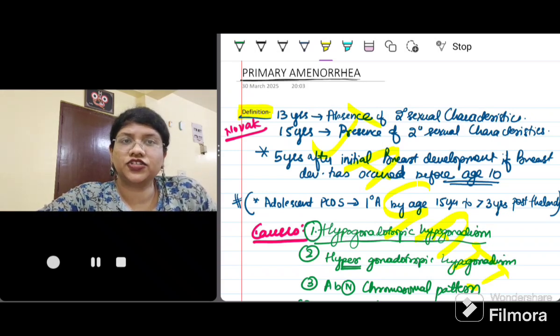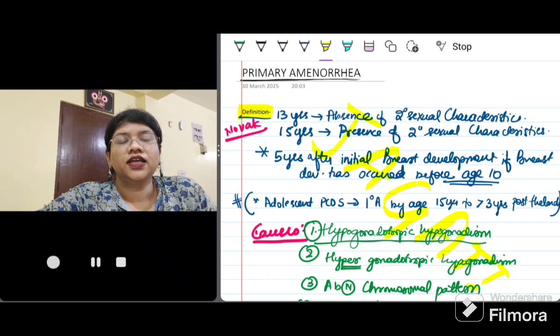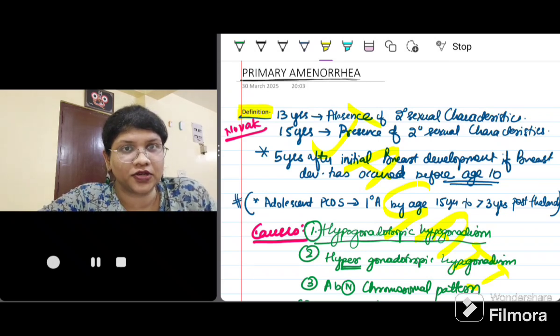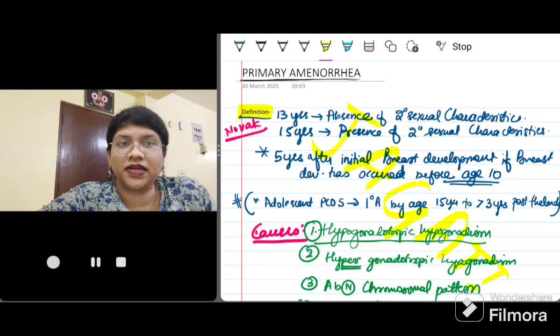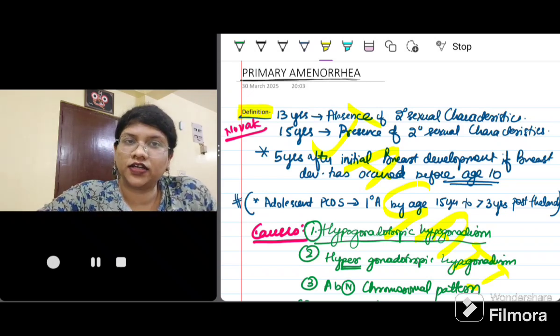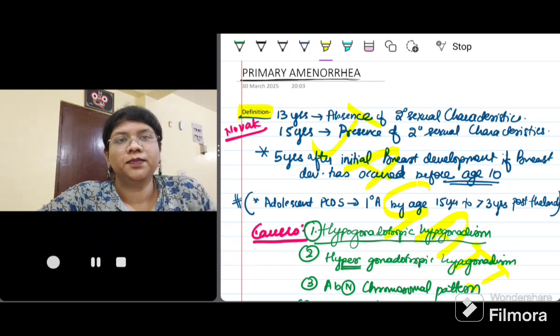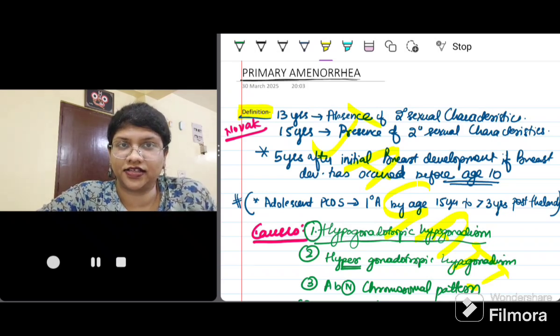Earlier, the age cutoff was different. Now, it is failure of attaining menarche by the age of 13 years in absence of secondary sexual characteristics, or failure of attaining menses by the age of 15 years in presence of secondary sexual characteristics. Remember, the earlier definition was 14 and 16 years and some textbooks still follow that, but this is according to Novak latest edition.